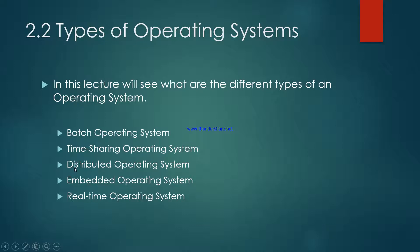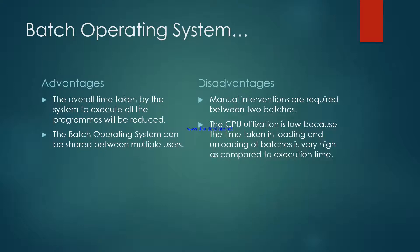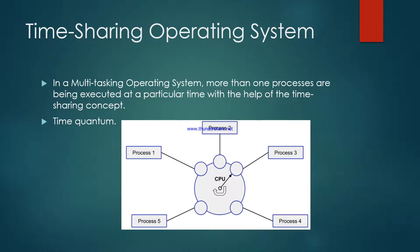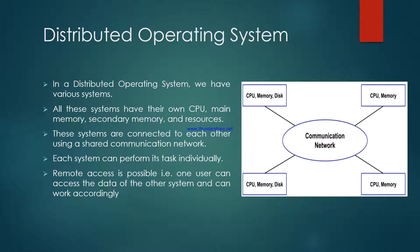First, we will discuss the distributed operating system. After that, we will go to the embedded operating system, and finally, we will try to understand the real-time operating system. The batch operating system and time-sharing operating system, including their advantages and disadvantages, were already discussed in the previous lecture. Now we will try to understand what is the distributed operating system.